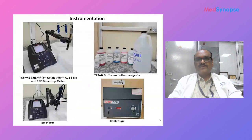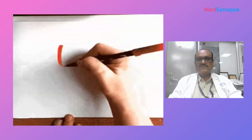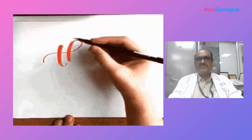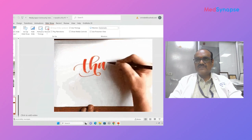These are the instrumentations we are using with respect to fluoride estimation. This is an ion-selective electrode procured from ThermoScientific Orion Star, used with TISAB — Total Ionic Strength Acid Buffer. We also use a pH meter and centrifuge. This is a brief presentation about the fluorosis research we are conducting at our center.